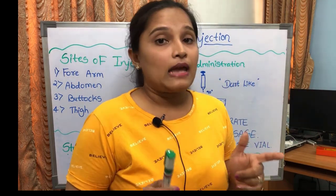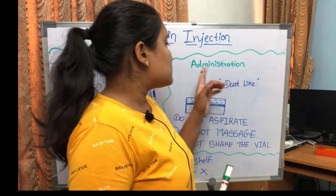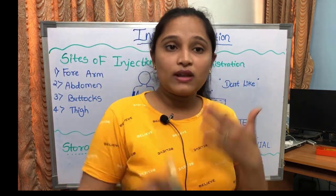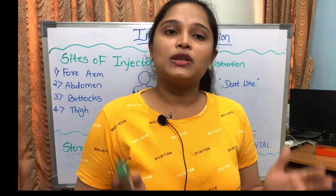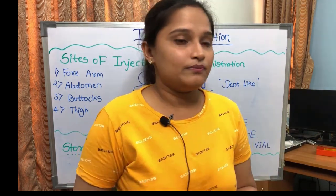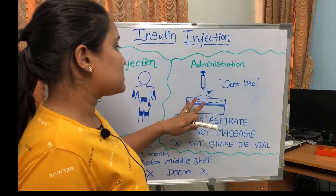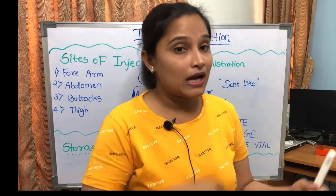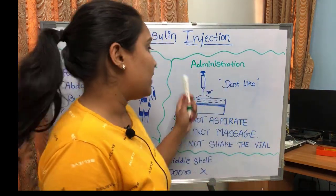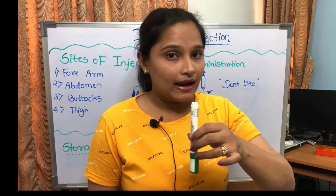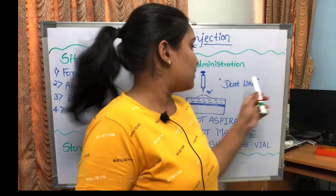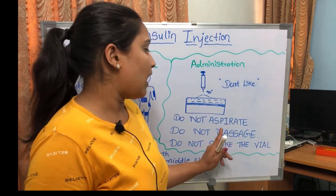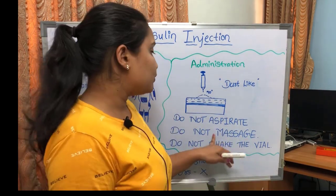Insulin is administered at 90 degrees, because the needle of the insulin syringe is very small — so even at 90 degrees it will only reach the subcutaneous layer. First, wash your hands, wear gloves, clean the site, hold the skin, and inject the needle at 90 degrees in a dart-like motion. Do not aspirate, and after withdrawal do not massage.